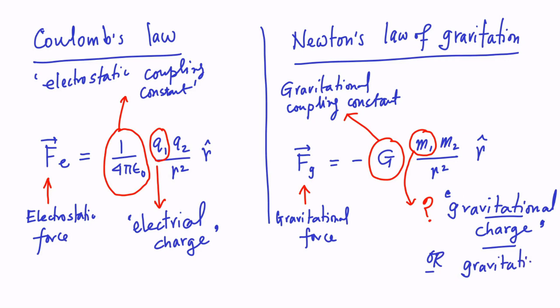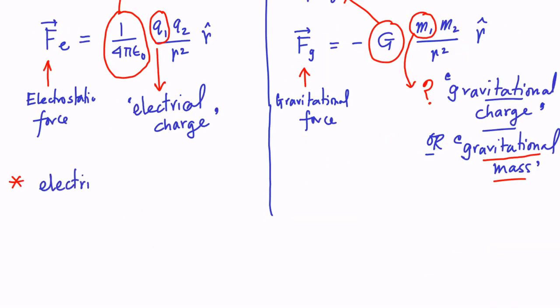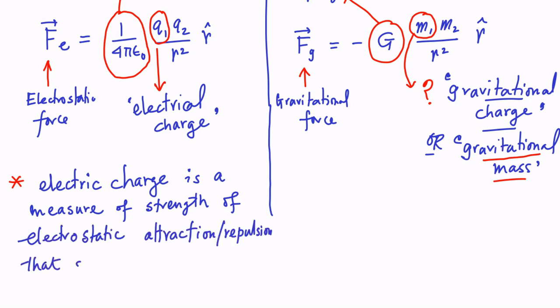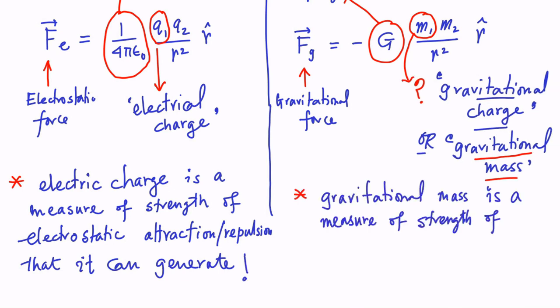We can also say gravitational mass of these two particles. Clearly, electric charge is a measure of the strength of electrostatic attraction or repulsion that a charge can generate. Similarly, gravitational mass or gravitational charge is a measure of the strength of gravitational attraction. To contrast: gravitational mass is the attractive power of a given object, whereas inertial mass is the property of heaviness — how difficult a body is to move.